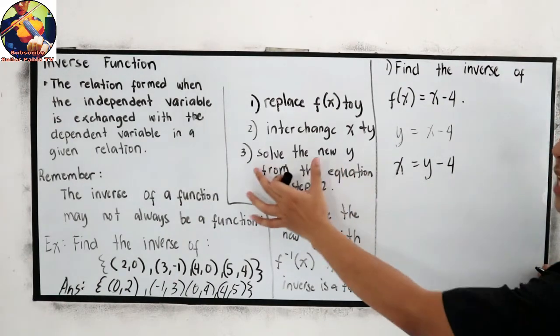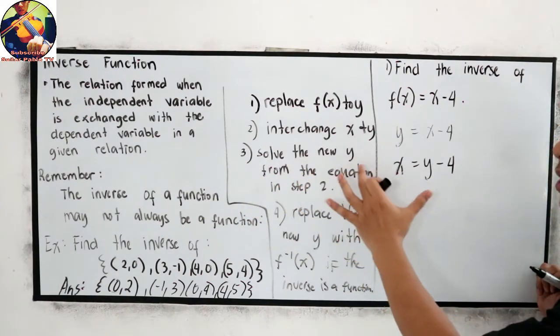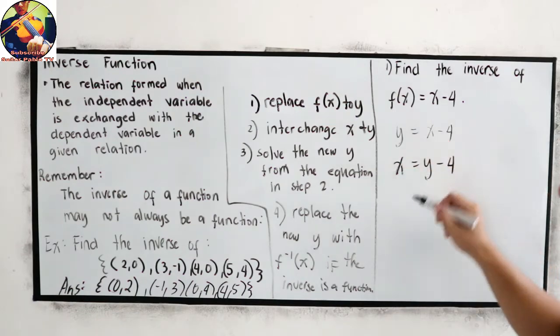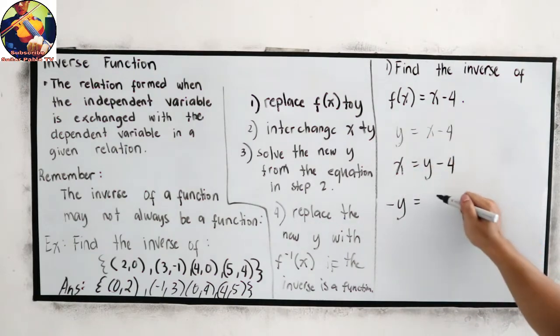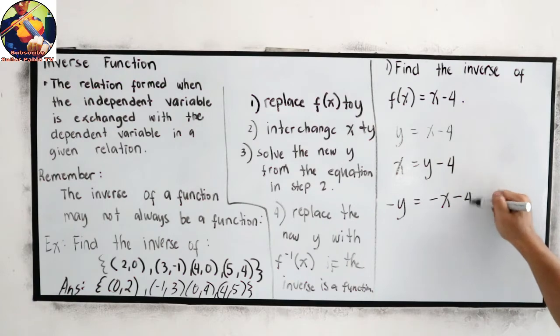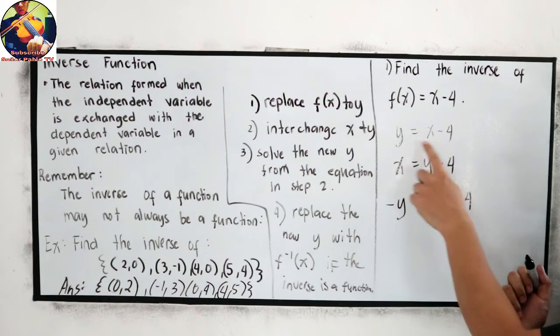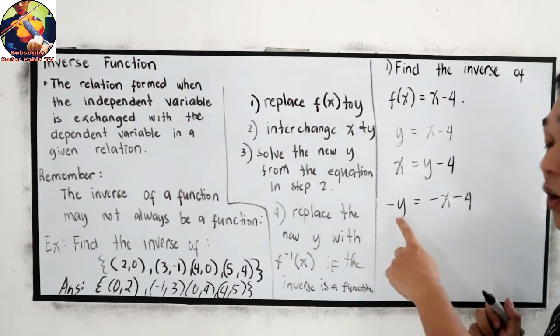Now, step number three, solve the new y from the equation in step two. So let us transpose. That will become -y = -x - 4. Now, solve for y.